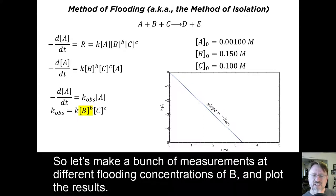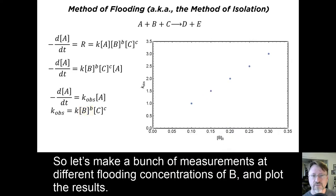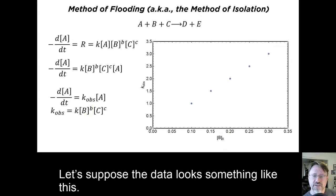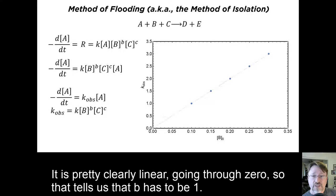So let's make a bunch of measurements at different flooding concentrations of B, and plot the results. Let's suppose the data looks something like this. It is pretty clearly linear, going through zero. So that tells us that B has to be 1.